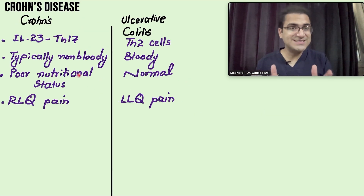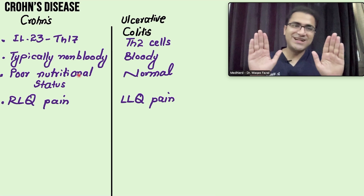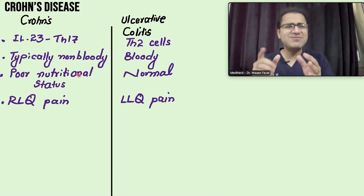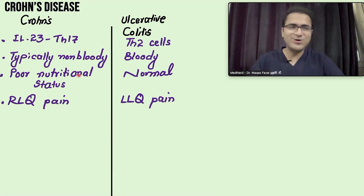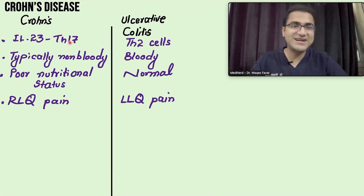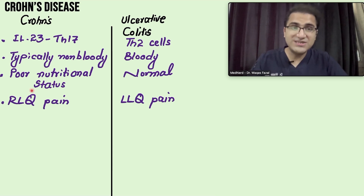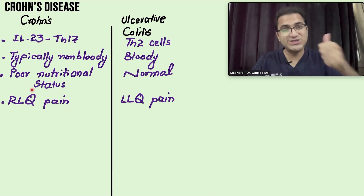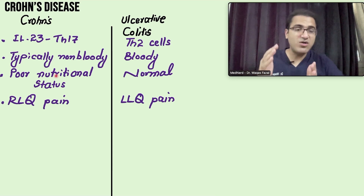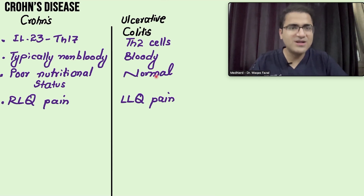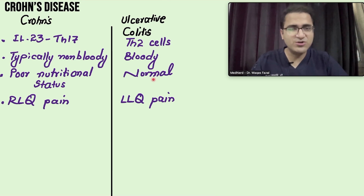This is a high-yield slide comparing Crohn's disease and ulcerative colitis. Crohn's disease involves dysregulation of T-helper cell 17, which becomes overactive and attacks the GI tract. Ulcerative colitis involves T-helper cell 2 dysregulation. In Crohn's disease, diarrhea is typically non-bloody; in ulcerative colitis, diarrhea is bloody. Crohn's disease patients will have poor nutritional status due to watery diarrhea, fat loss, bile acid loss, and deficiency of fat-soluble vitamins because it involves the absorptive area of the GI tract — the ileum. Ulcerative colitis only involves the colon, so nutritional status is mostly normal.